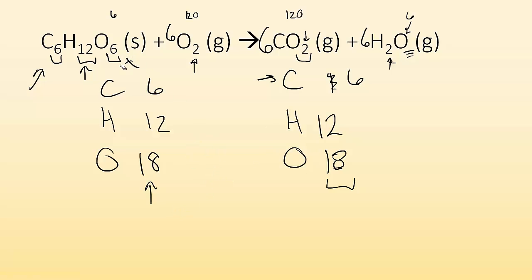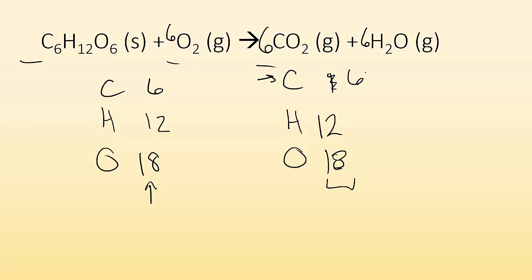Now the last thing is to check that the coefficients are the lowest possible whole number. I have one for C6H12O6, then six, six, and six. Everything is good — I can't reduce this anymore because there's a one in front. If there were a two in front of everything, I'd divide everything by two to get the simplest whole number ratio. But there isn't, so I'm done. I balanced that one.